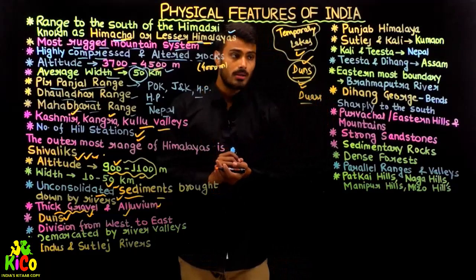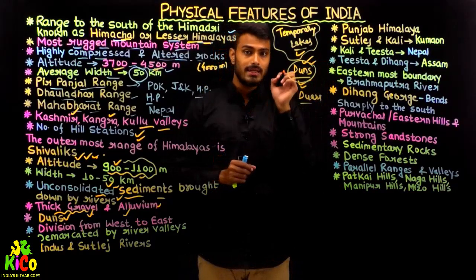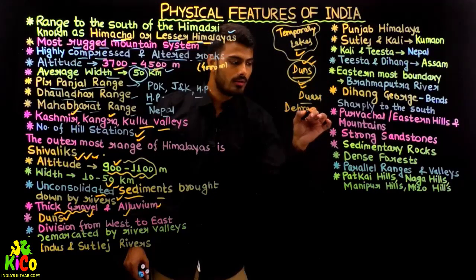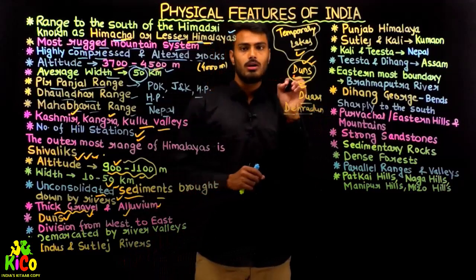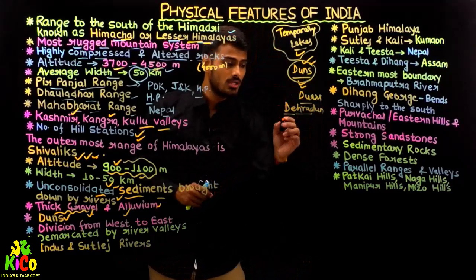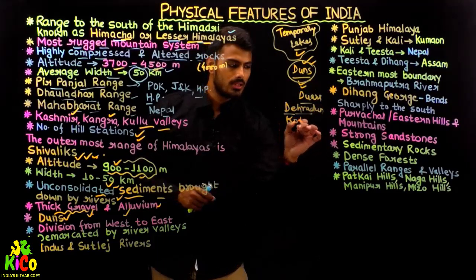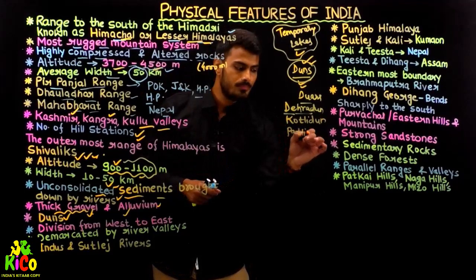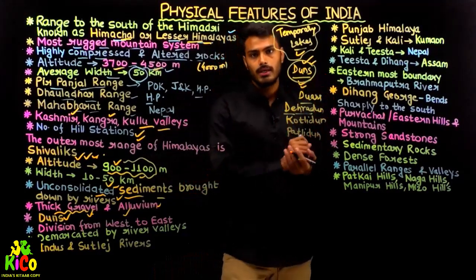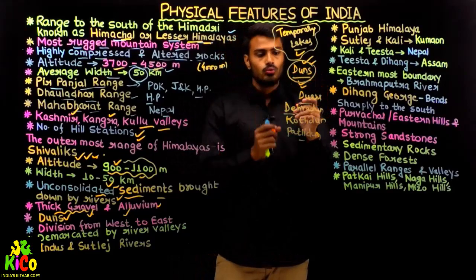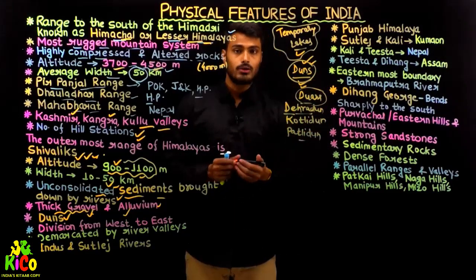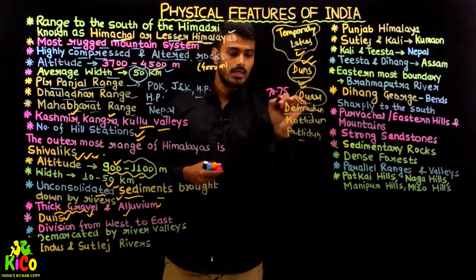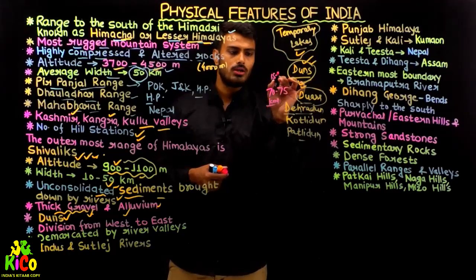These are basically duns and duars. In India, especially in Uttarakhand, we can see examples like Dehradun, Patli Dun, and Kotli Dun. Dehradun is the capital of Uttarakhand state and also a very famous tourist place. The Dun valley has a length of around 70 to 75 kilometers and a width of 15 to 20 kilometers.